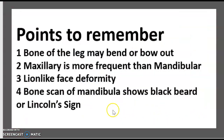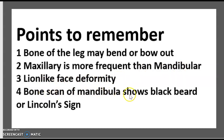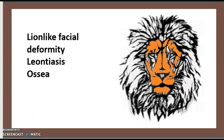Points to remember: the bones of the leg may bend or bow out. The maxilla is more frequently affected than the mandible. There is a lion-like face deformity. Bone scan of the mandible shows a 'black beard' or ankle sign. This lion-like facial deformity is also called leontiasis ossea.